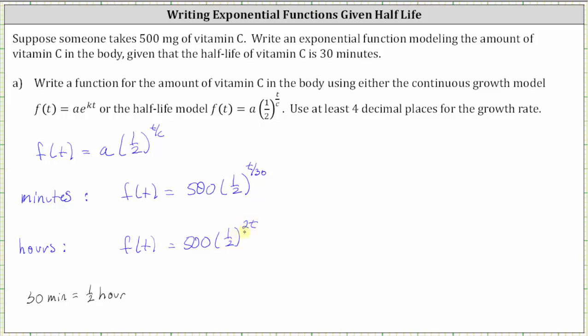This exponent should make sense because when the time is 30 minutes, or one-half of an hour, t is one-half, and two times one-half is one. So after half an hour, the amount left is 500 times one-half, or 250.